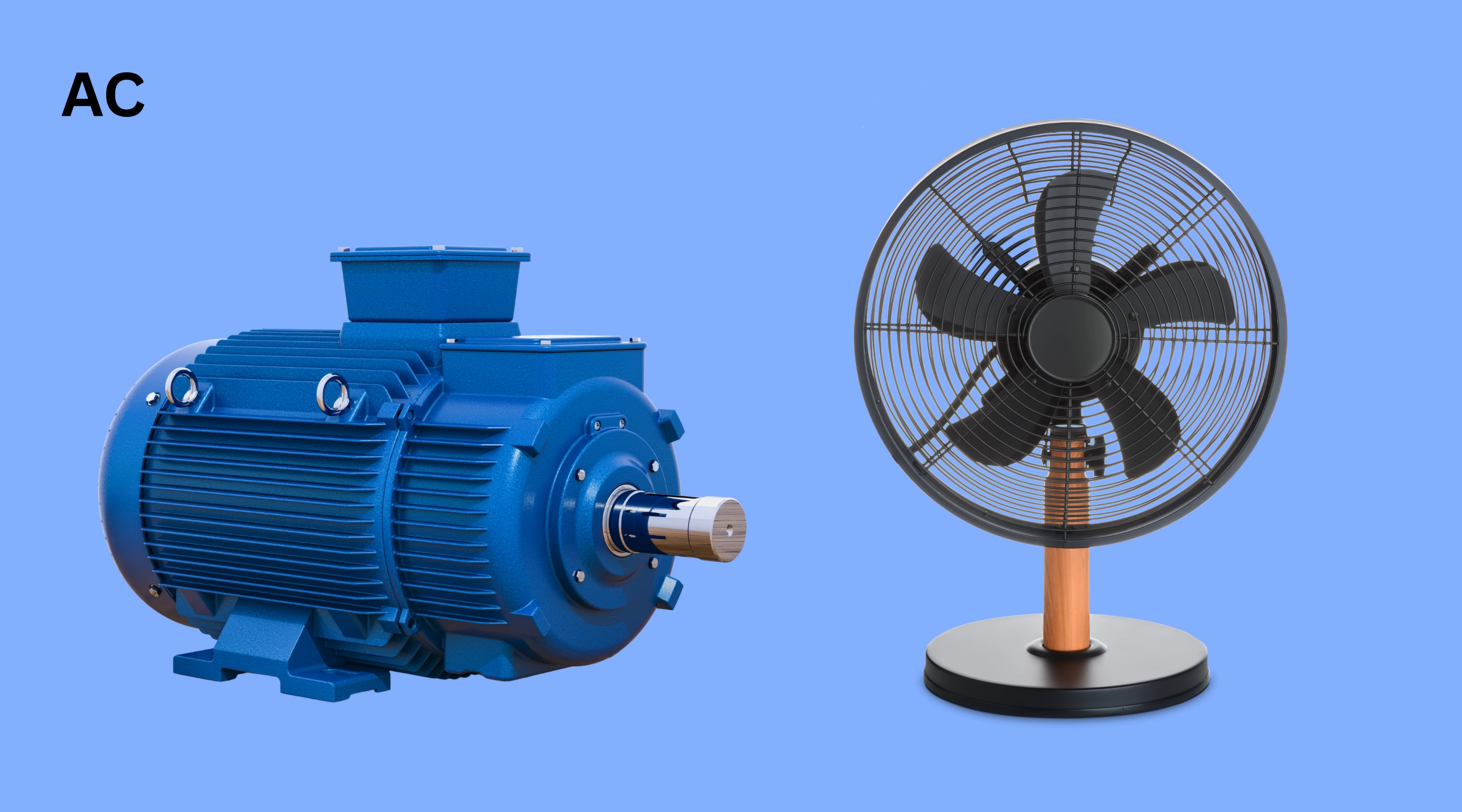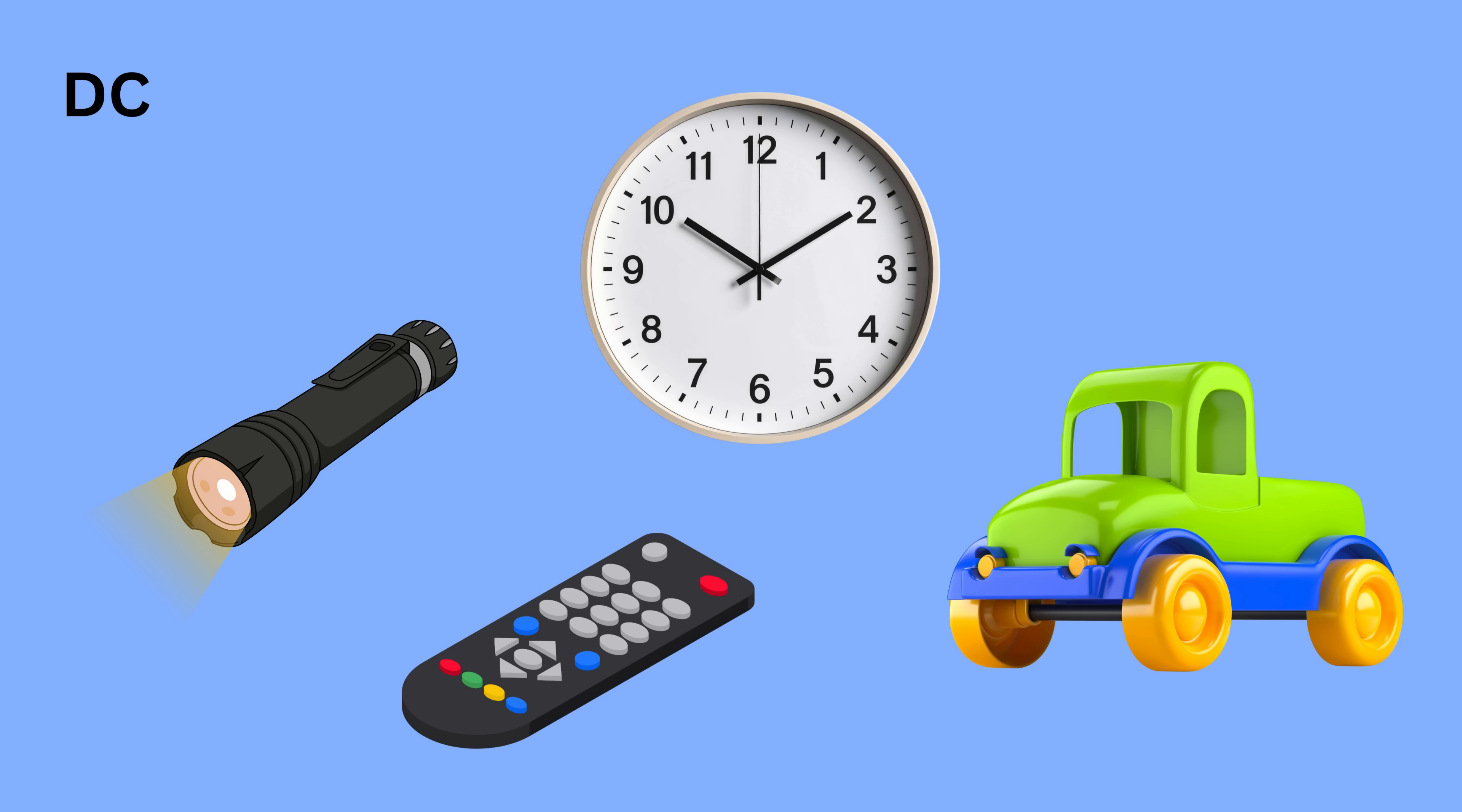Also, most large appliances like motors and fans run directly on AC. In short, AC is the backbone of our power systems because it is flexible, efficient, and practical for large-scale use, while DC is stable and safe for low-power electronic circuits.